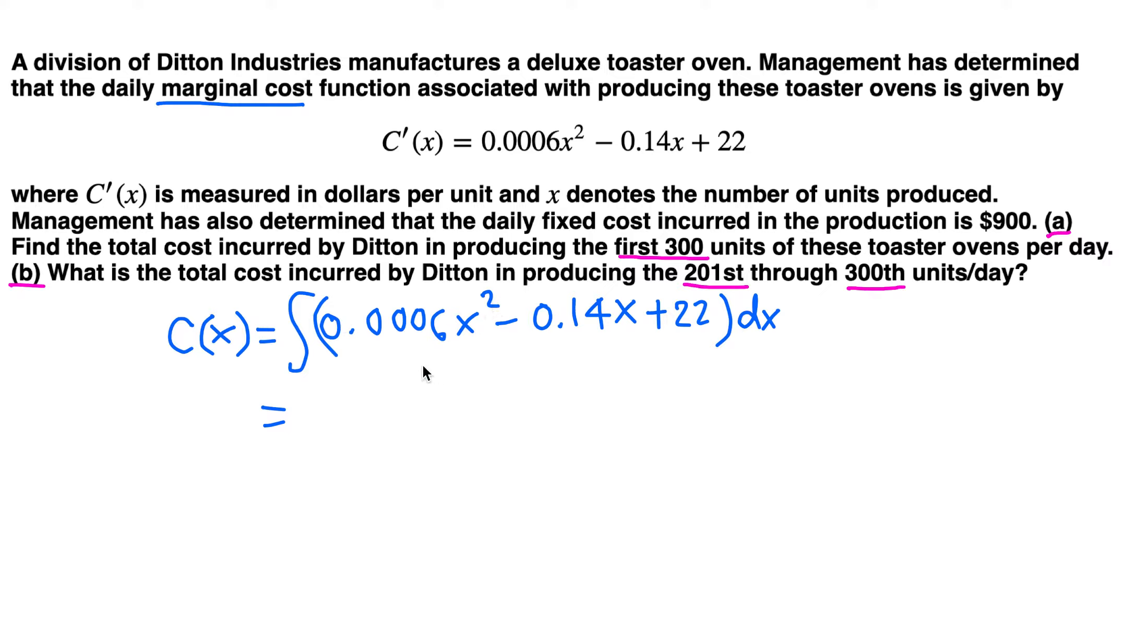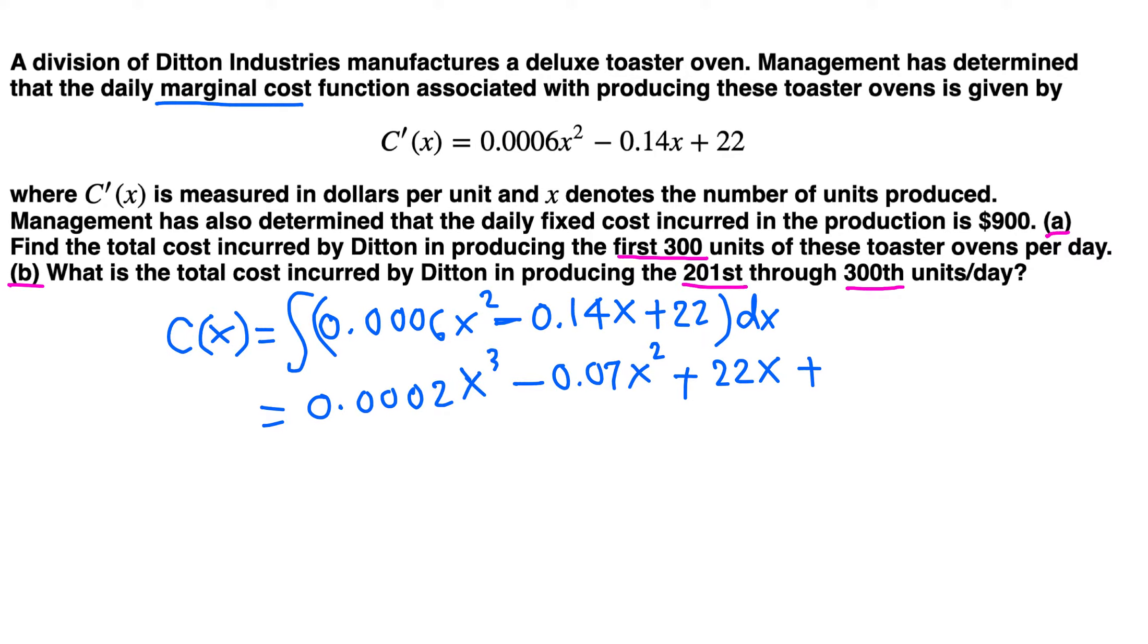This is constant times x squared, and the anti-derivative is x³ over 3, so divided by 3. That gives us 0.0002x³. Minus 0.14x anti-derivative is 0.14 times x² over 2. Divide 0.14 by 2 using your calculator: 0.07x². Plus the anti-derivative of 22 is just 22x plus constant.